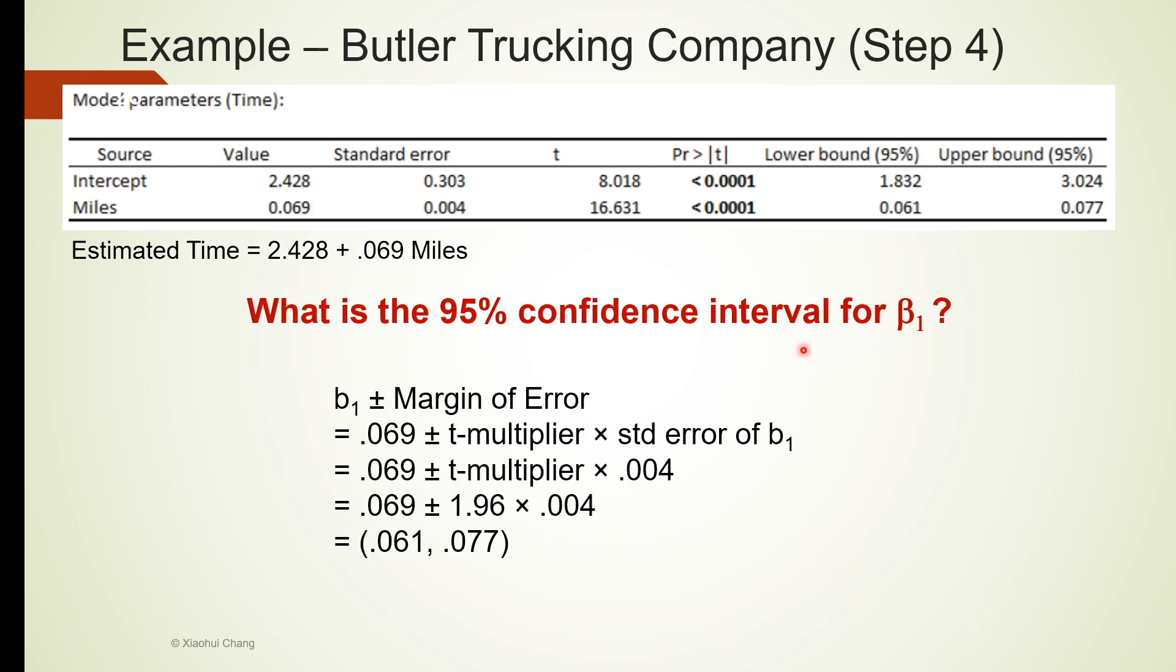Sometimes we may be interested in estimating the size of this effect. We just talked about the effect being estimated to be 0.069. This is a point estimate. We also learned about confidence interval estimates that are better than point estimates, as they include uncertainty in the estimation. The confidence interval estimate for the slope coefficient can be calculated using the same formula we learned earlier, with a t multiplier and the standard error.